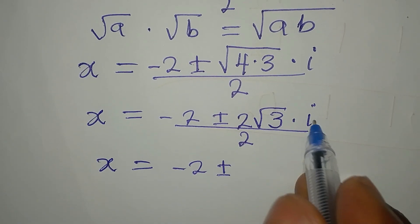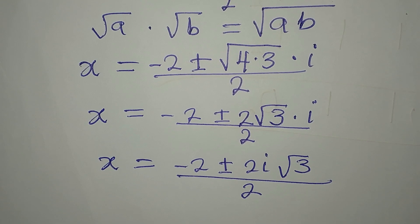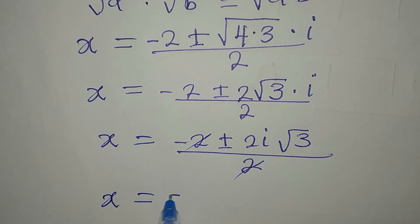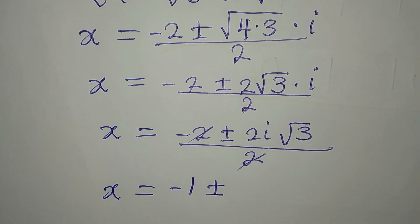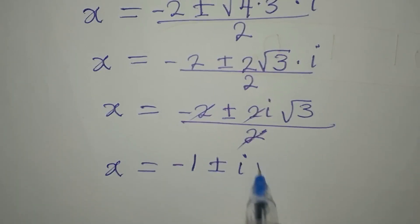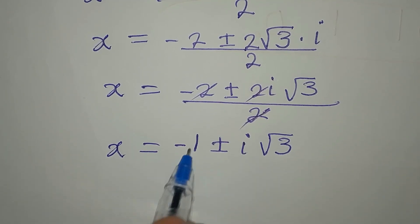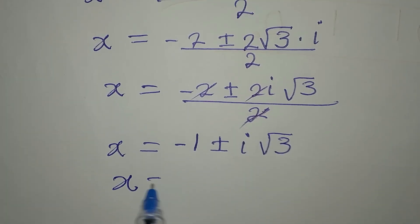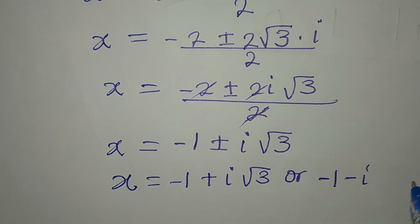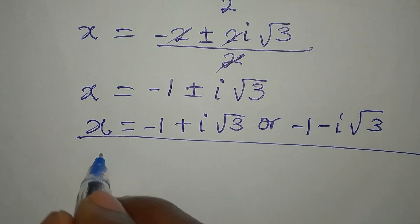So x equals negative 2 plus or minus 2i root 3, divided by 2. Dividing both numerator terms by 2, x equals negative 1 plus or minus i root 3. Note that the same 2 divides into both terms. We cannot combine the real and imaginary parts, so our two solutions are x equals negative 1 plus i root 3, or x equals negative 1 minus i root 3.